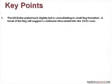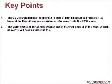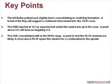Let's take a look at a few of our key points. The U.S. dollar pulled back slightly but is consolidating in a bull flag formation; a break of the flag will suggest a continued retracement into the 82–83 zone. The CDD rejected at 112 as expected but ended the week back up in the zone — a push above 112 will have us targeting 115. The YUK consolidated within the 98–99 range; a push to test 99.5 resistance is likely, and a close above 99.5 opens the window for a continuation to the upside.